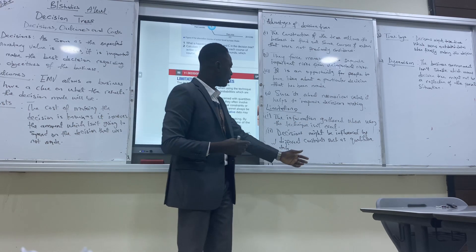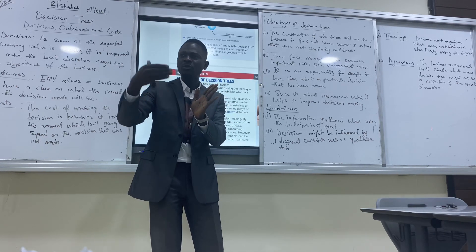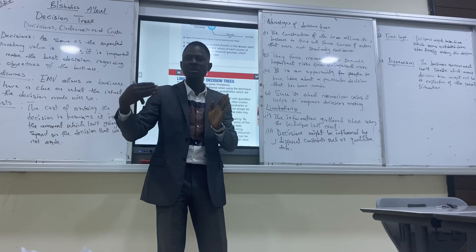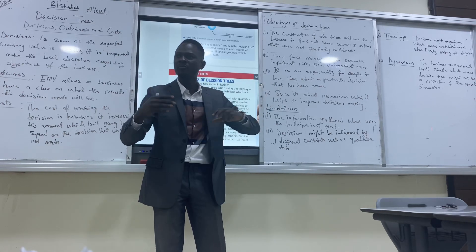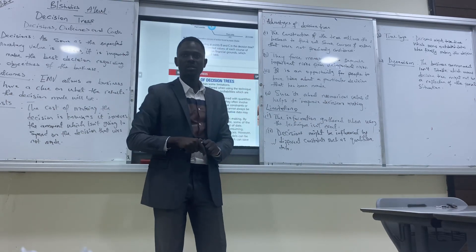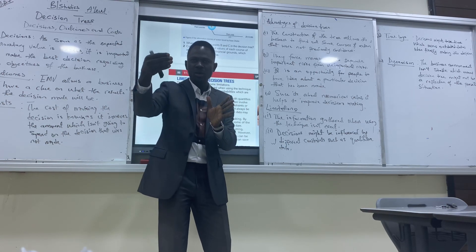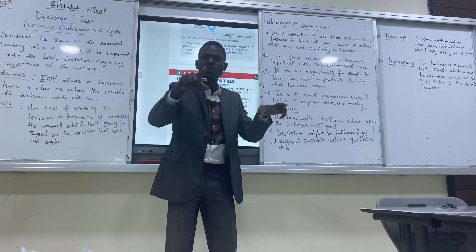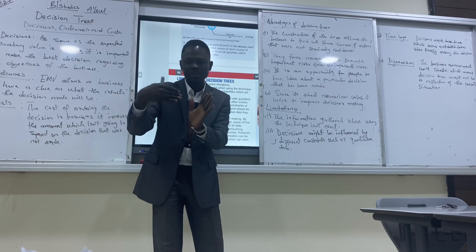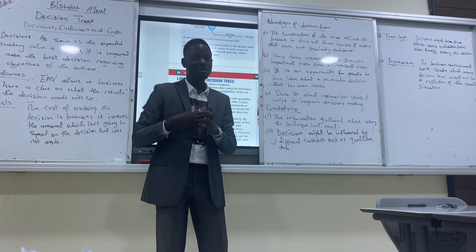The third disadvantage is time lags — the time frame between when we are about to take the decision and when we have the data for that decision available. For example, we're going to take a decision maybe in March, but we have information from January. By the time we get to March, the information we have from January might be outdated. That is time lag — the time frame between when the decision is being made and when you gathered that information. So that information might not be useful at the time you're making the decision.